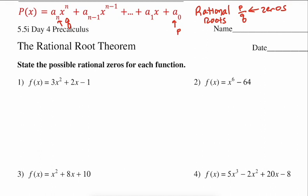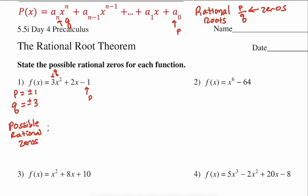It says: state the possible rational zeros for each function. If you recognize it's a polynomial in descending order, we need to list out what are the P's and what are the Q's. The P's are any integer that divides into our constant term, the negative 1. So our P's could be plus or minus 1 — that's all that goes into 1. Our Q's are any integer that divides evenly into the lead term coefficient, so our Q's are plus or minus 3. Our possibilities are all combinations of P over Q.